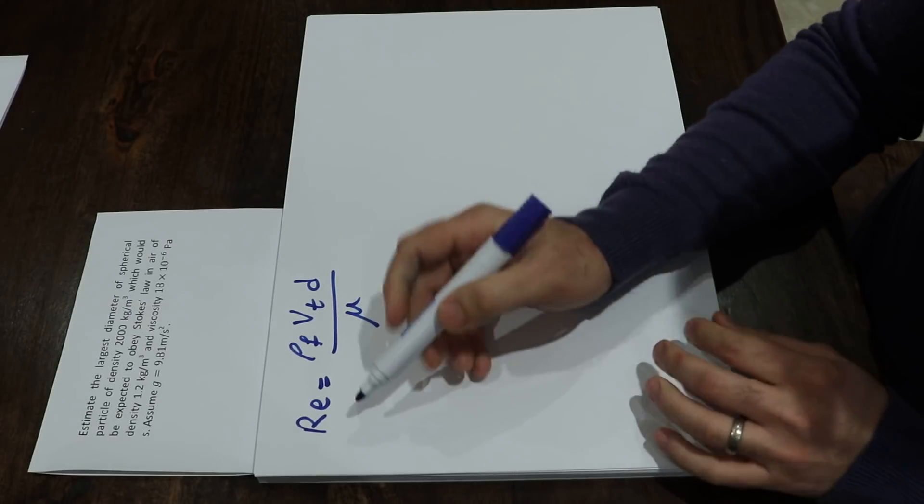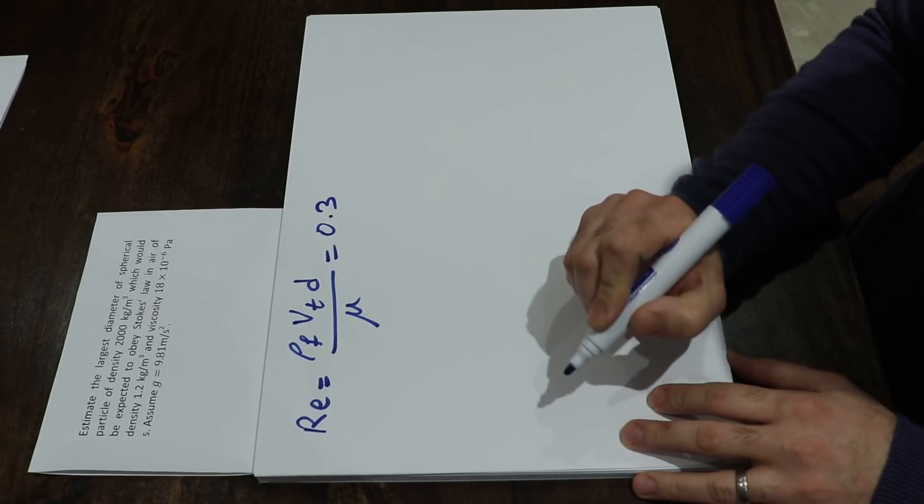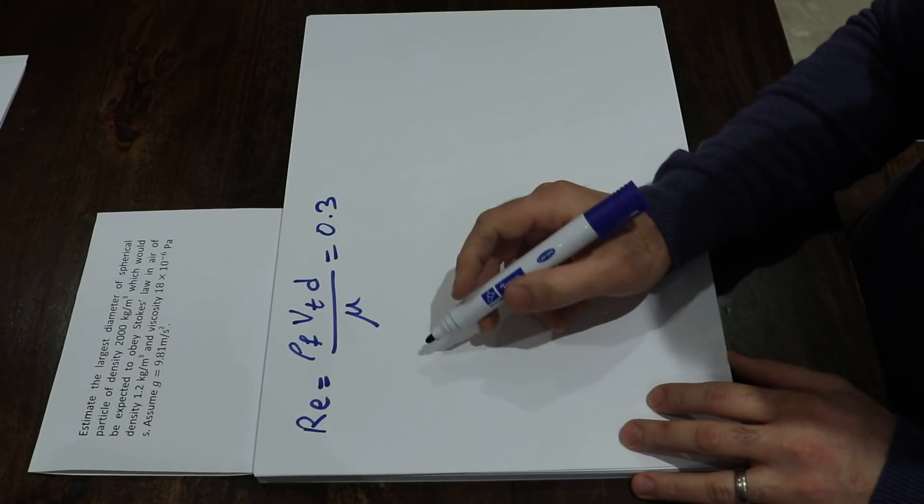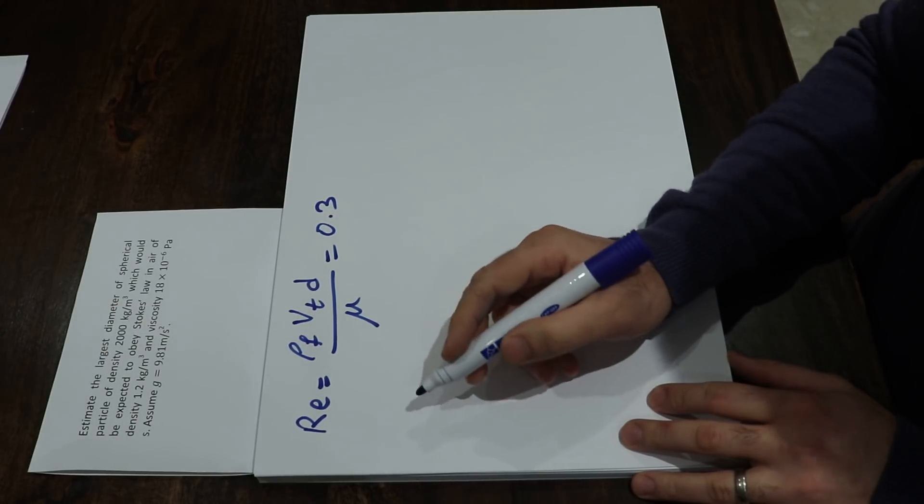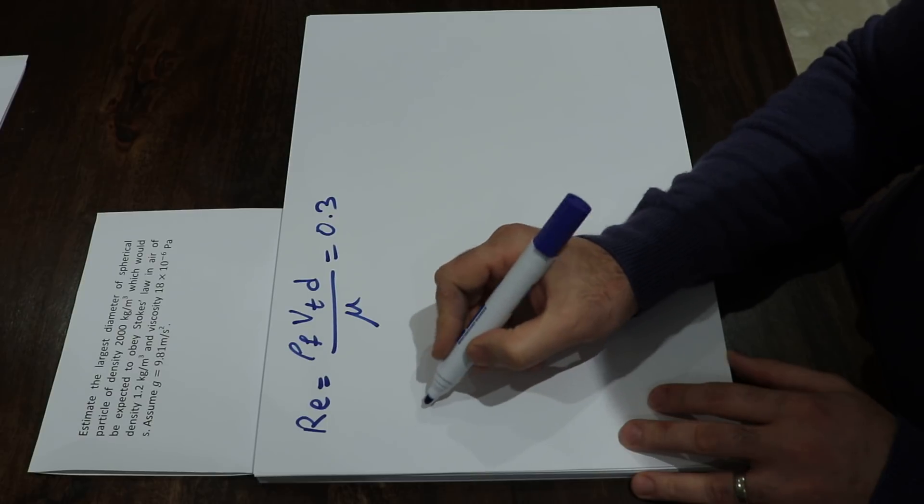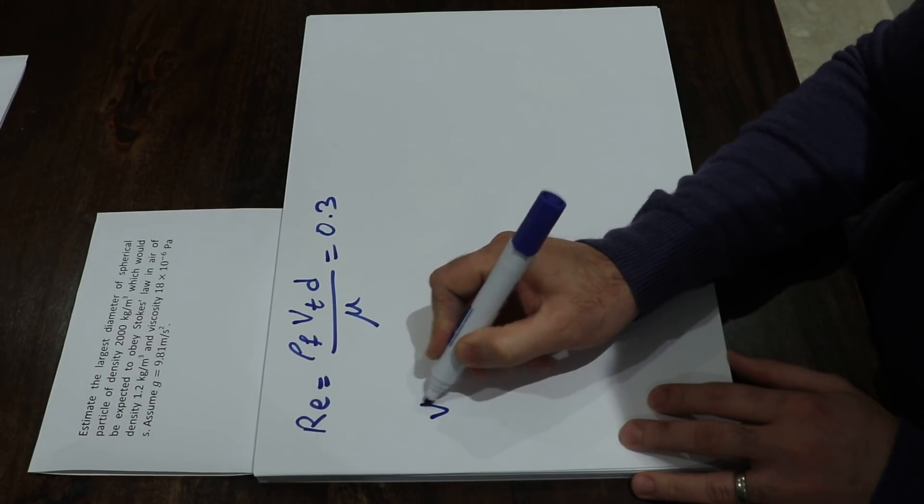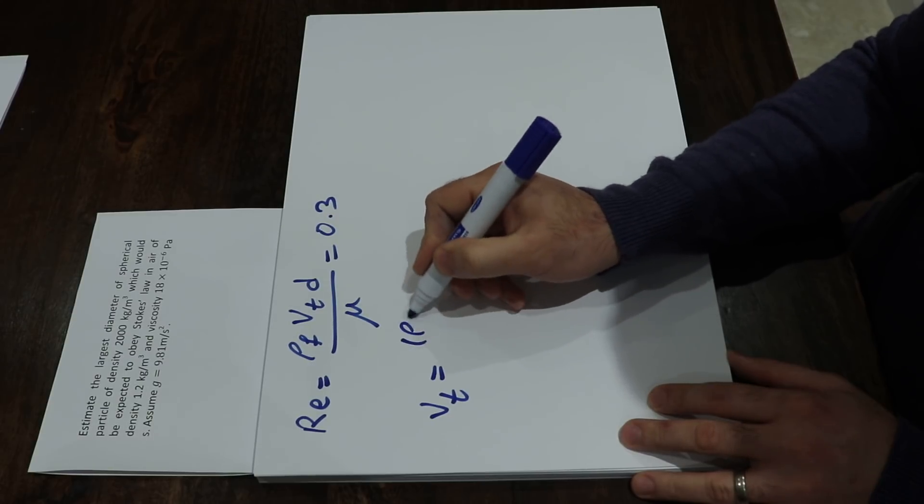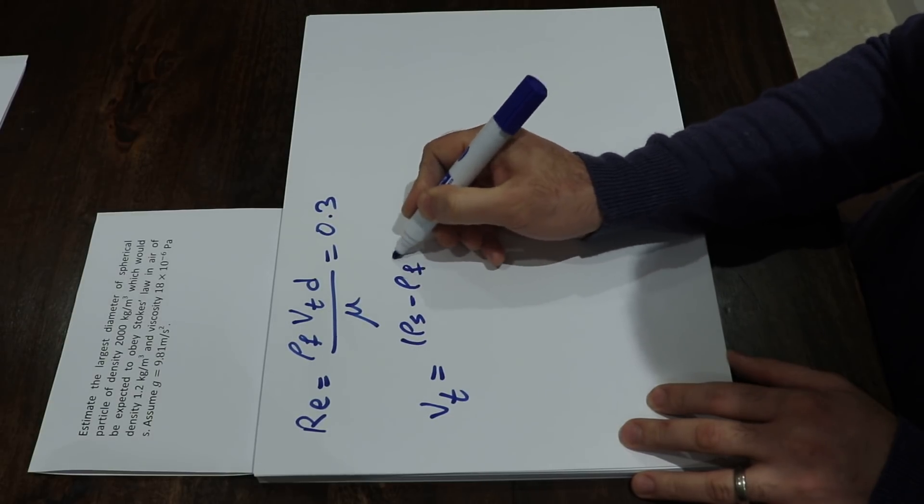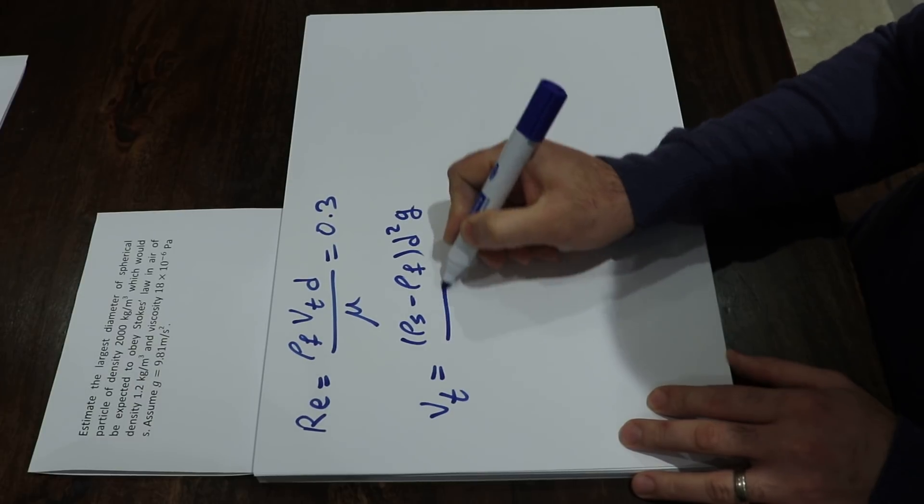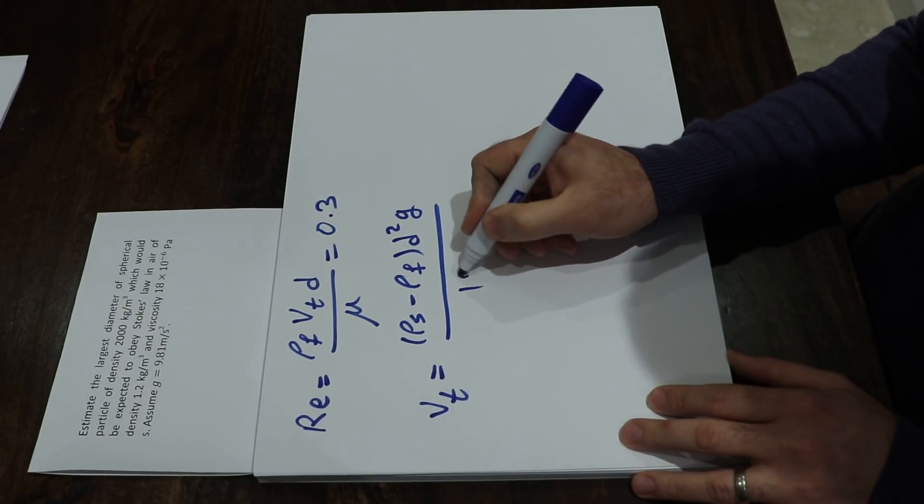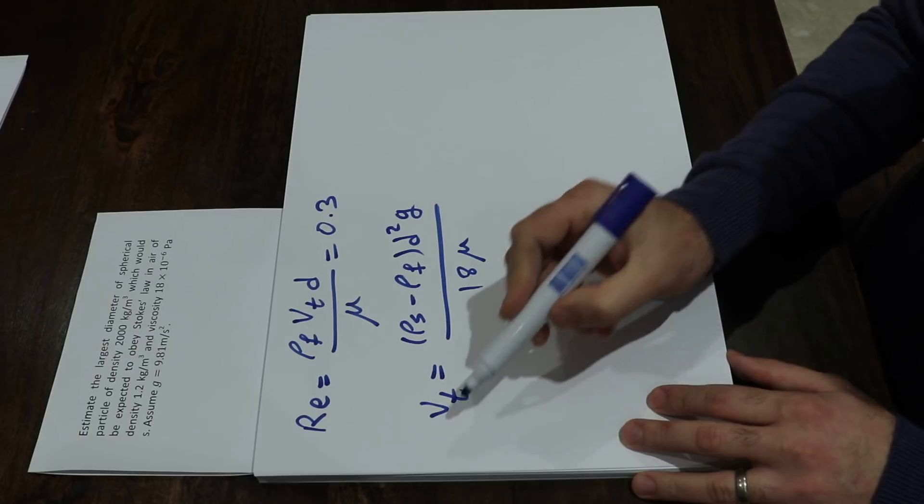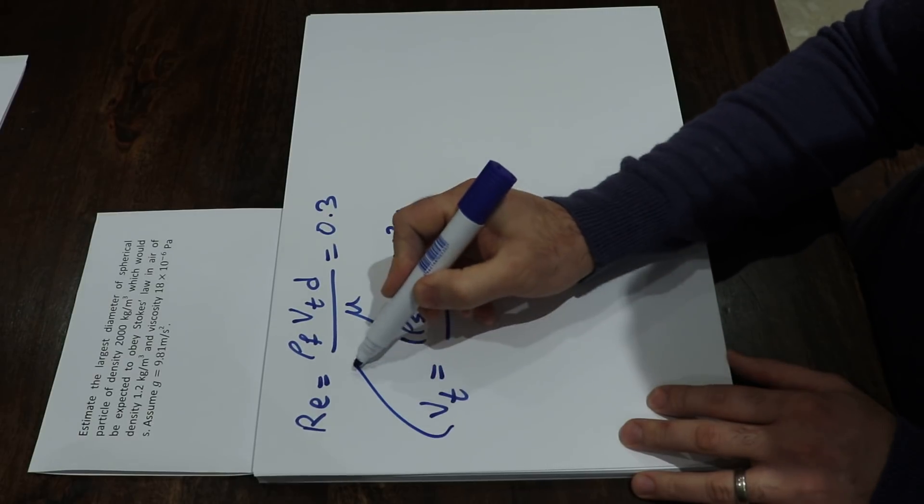We know that the upper limit of the Reynolds number is 0.3. Also, based on the Stokes regime, the terminal velocity can be calculated using this equation: Vt = (ρs - ρF)·d²·g / (18μ).